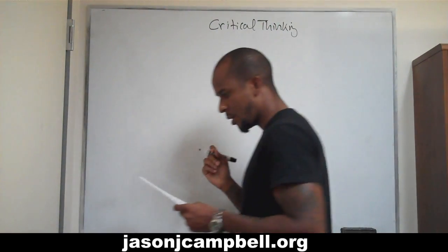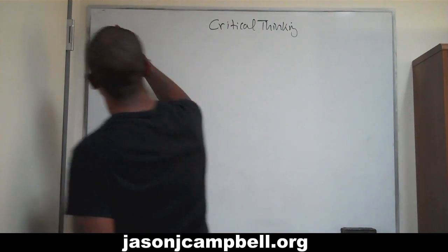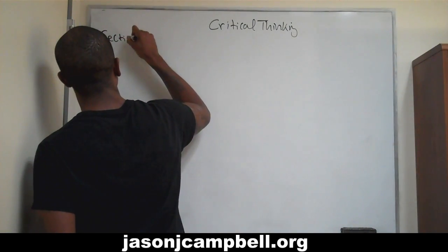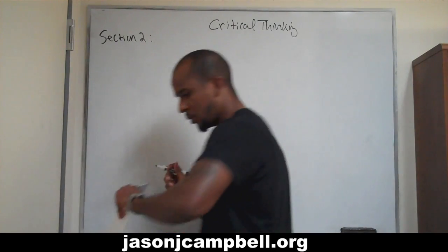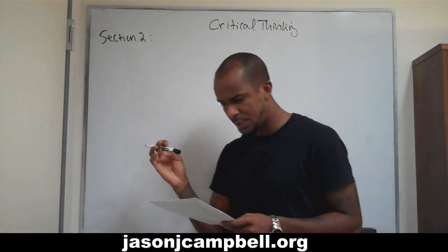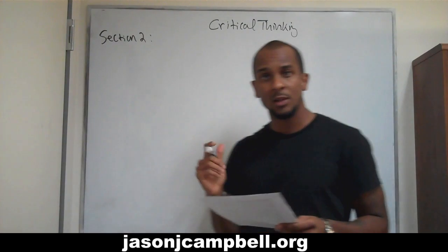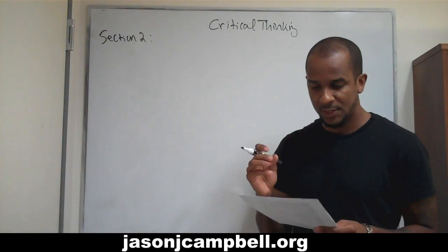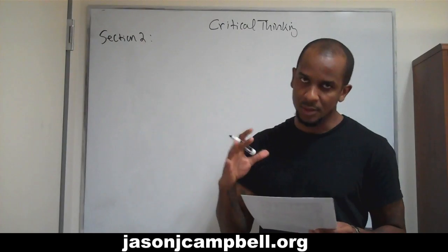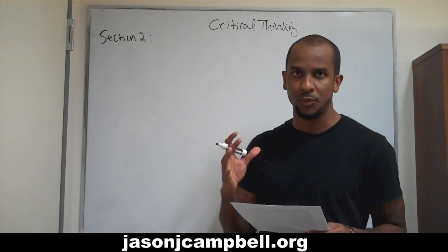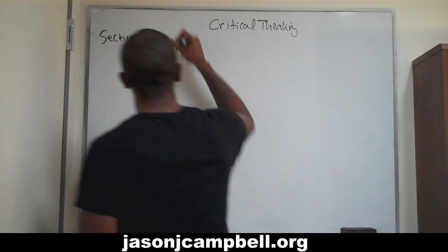So this is critical thinking, and we are doing section two. The title of this analysis is Heuristic Modeling from Three Forms of Analogies. It's a bit of a mouthful, but I'll explain all of this in a second.